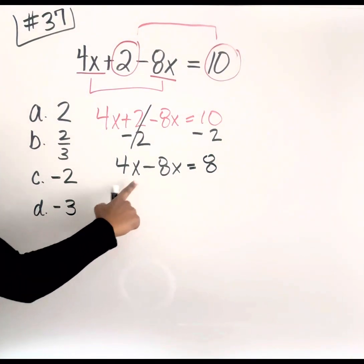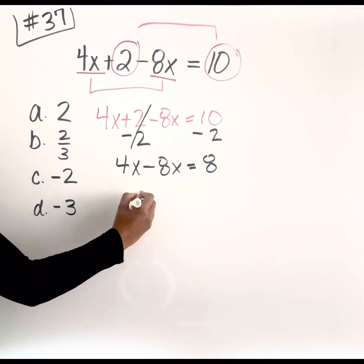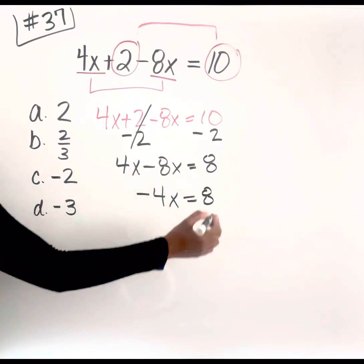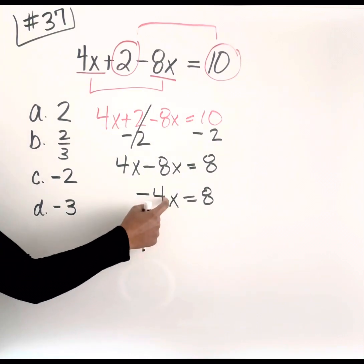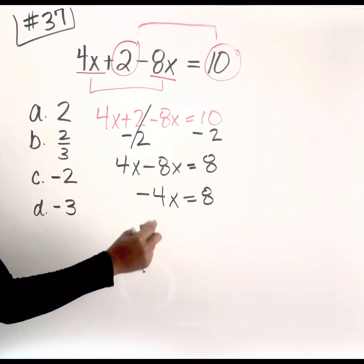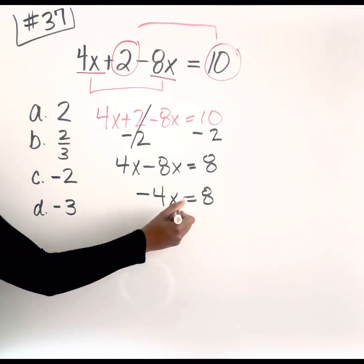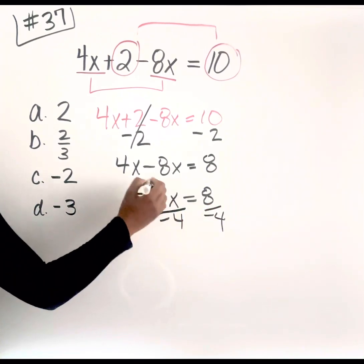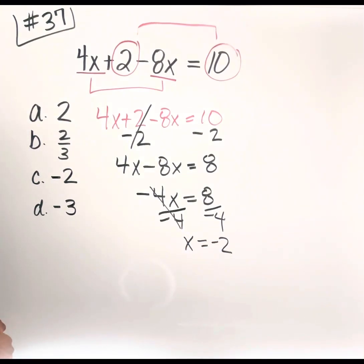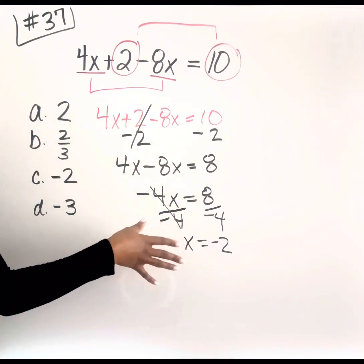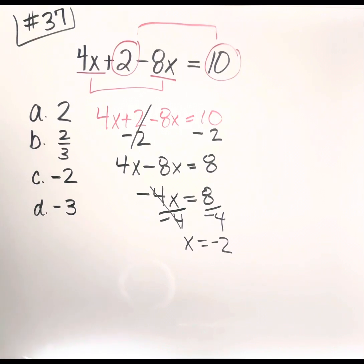These are like terms, so we just focus on the numbers and the variables stay the same. 4 minus 8 gives us negative 4, then we bring down our X: negative 4X equals 8. To get X by itself, I know 4 and X are joined by multiplication because there's nothing in between them. The inverse of multiplication is division — they're married through multiplication, so we divorce them by dividing. We divide both sides by negative 4. Those cancel out, and 8 divided by negative 4 gives us negative 2. You have a 4-function calculator built into the exam, so you can do the computation there. The answer is C.